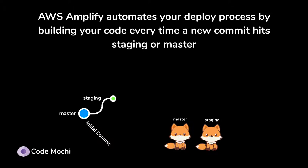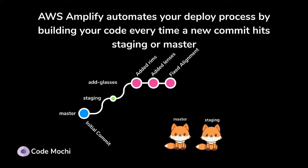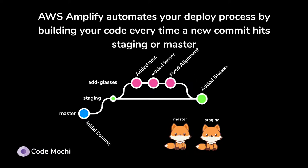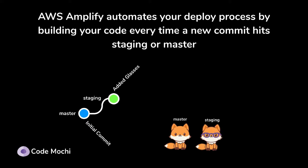Today we're going to talk about how you can use AWS Amplify to act as an automated pipeline for delivering your website to the internet. The end product is that we will have two different stages — a staging branch and a master branch — and any time you check in code and merge it onto either staging or master, AWS Amplify will build your code and deploy it to a live working website.